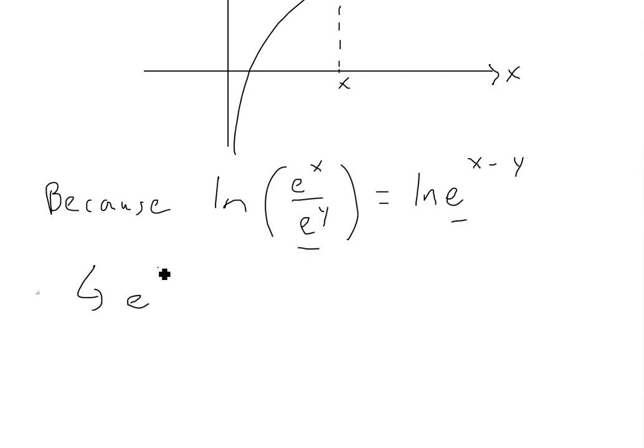So we get e to the x divided by e to the y is equal to e to the x minus y. And this is the proof for our law two of the exponent laws.